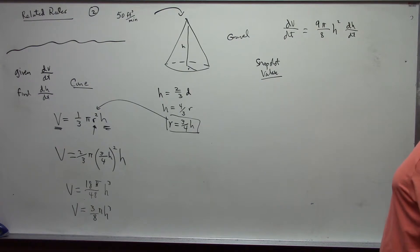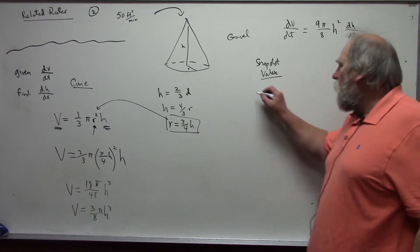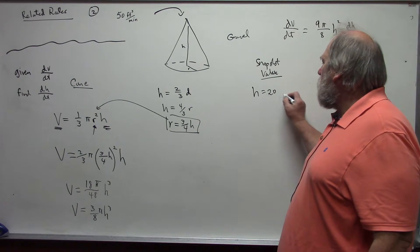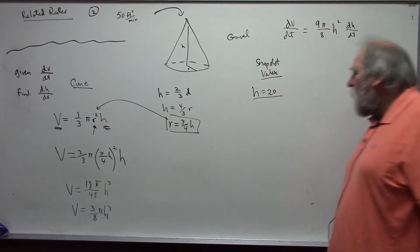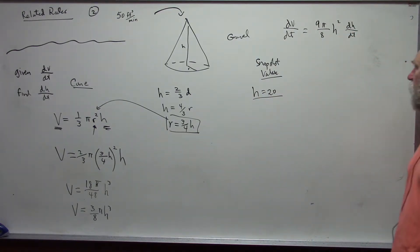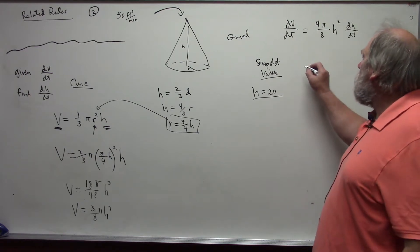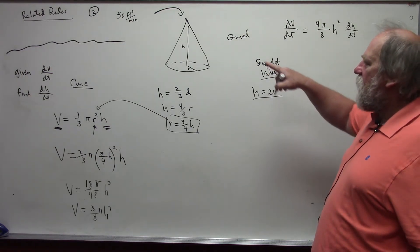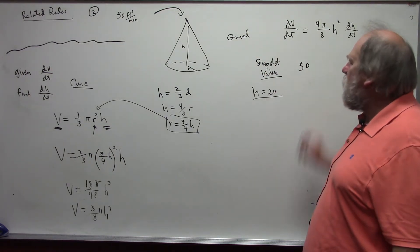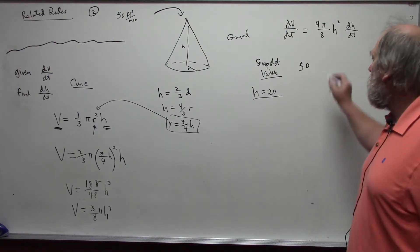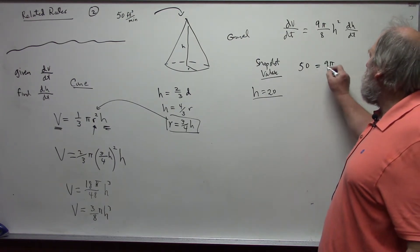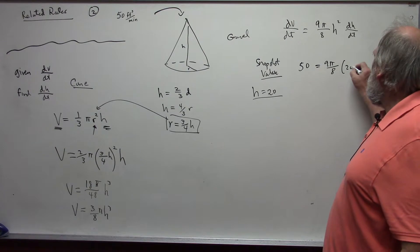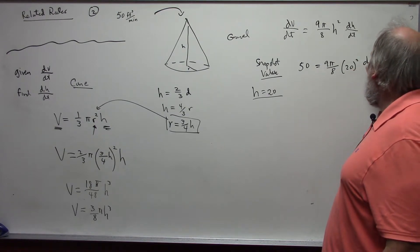And the snapshot value in this case is when h is equal to 20. And so, therefore, I can substitute this in. My dv/dt was given as 50 cubic feet per minute is equal to 9 pi over 8, 20 squared, dh/dt.